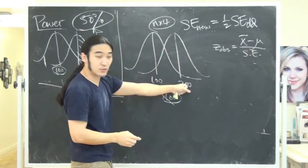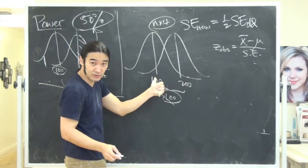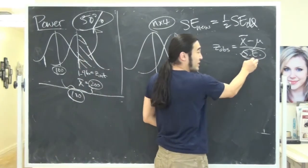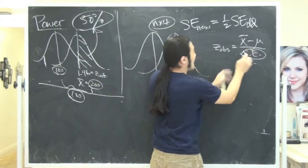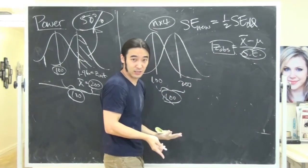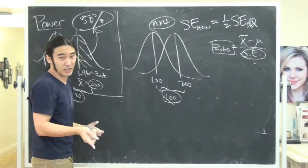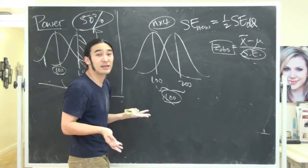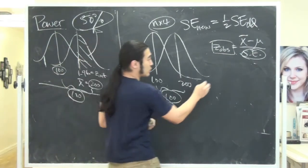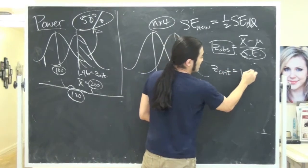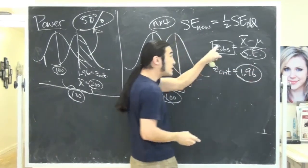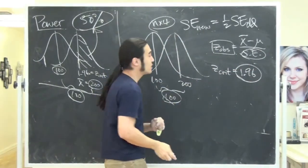If this number stayed the same, which it did, it stayed at 200. And if this number stayed the same, which it did at 100, and then I messed with this, if I change this guy, this number also has to change, right? So my z-observed is going to change. My z-crit doesn't change, because my z-crit depends only on the alpha.